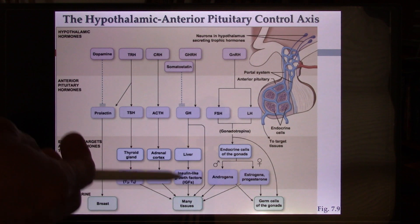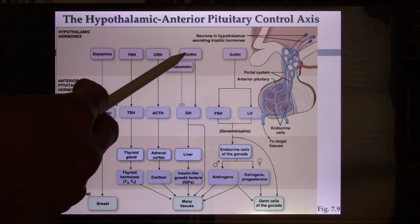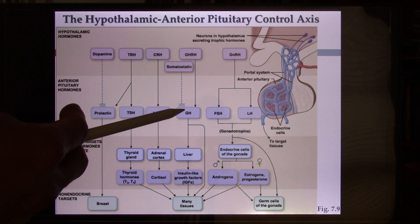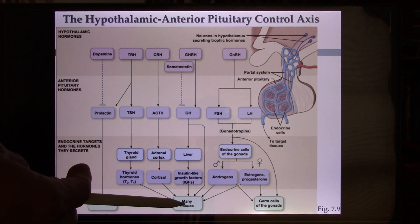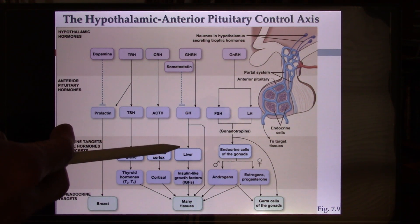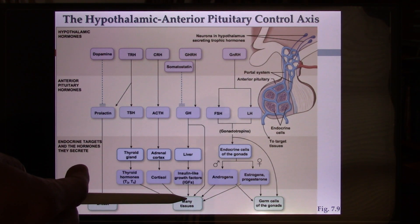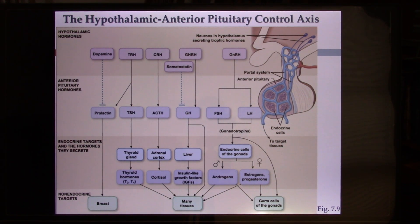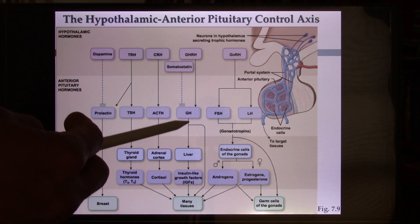Now let's look at the growth hormone pathway, which is activated during puberty. The hypothalamus releases GHRH, which goes to the anterior pituitary gland and triggers growth hormone release. Growth hormone can act as a traffic hormone or not. If not a traffic hormone, it will directly work on body tissues and ask the cells to grow. But it can also work like a traffic hormone — it goes to the liver and triggers insulin-like growth factor release, which then asks cells to grow. Somatostatin inhibits growth hormone release and this entire pathway.